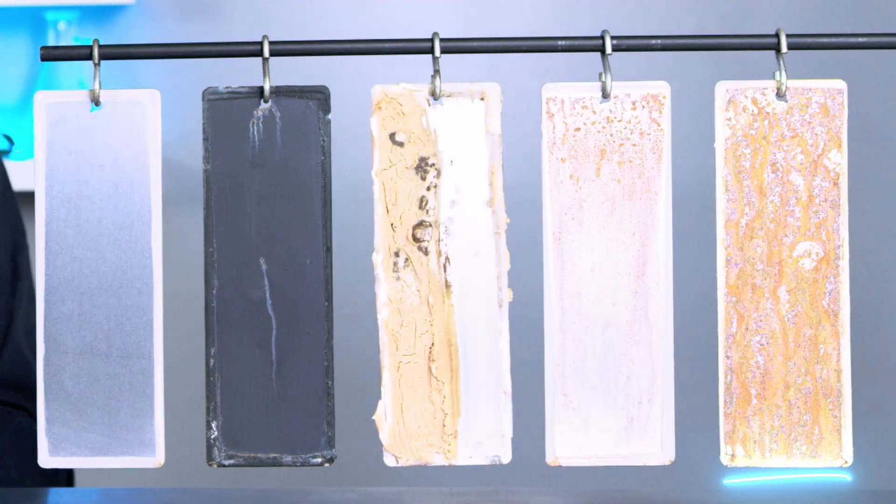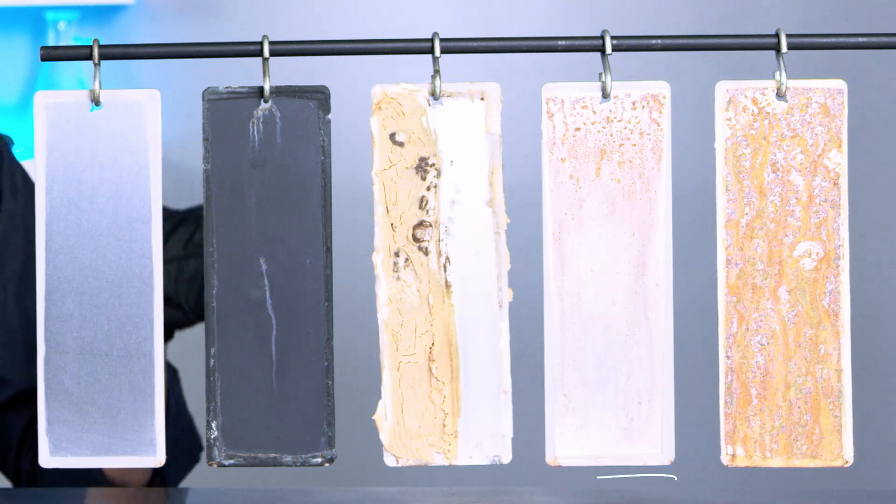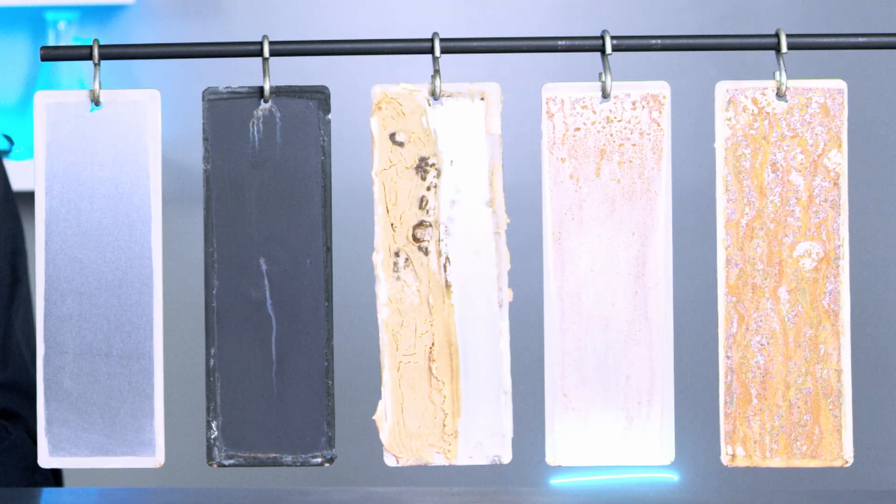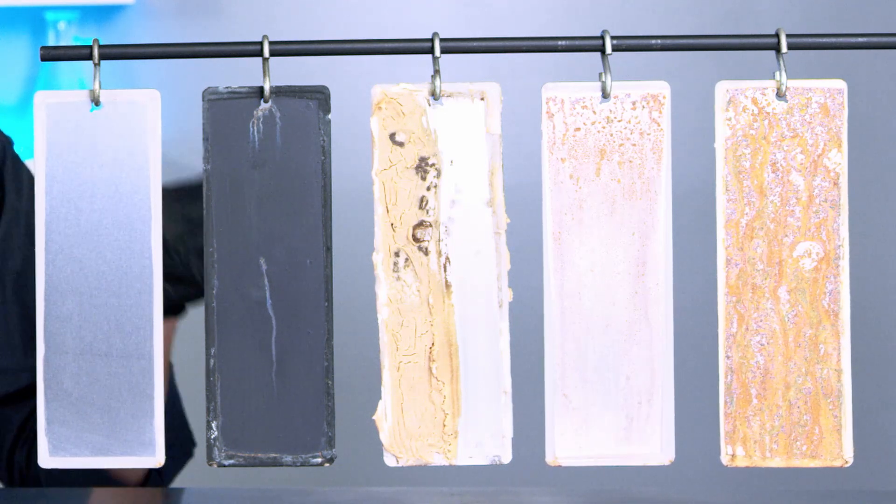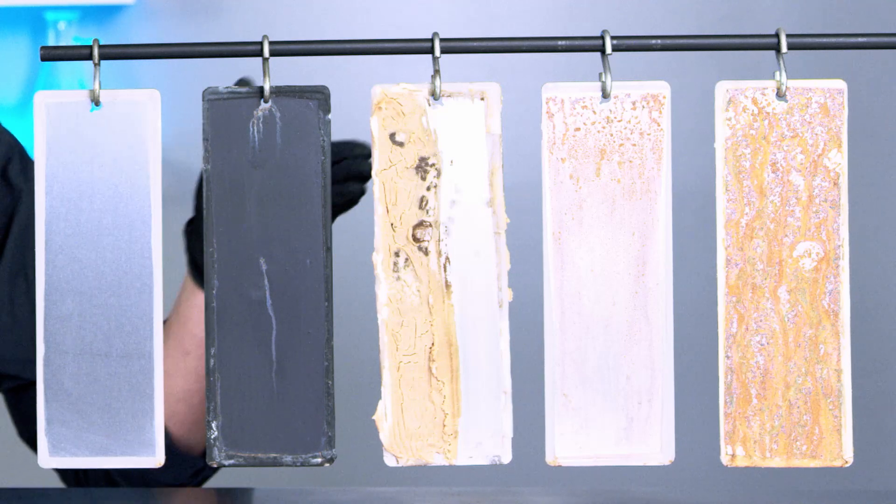The first panel had no protection applied to it and as you can see it's very corroded. The second panel we applied a thin oil-based rust protection product, and although it's provided some protection, after 72 hours in that salt spray cabinet chamber it's still quite corroded.